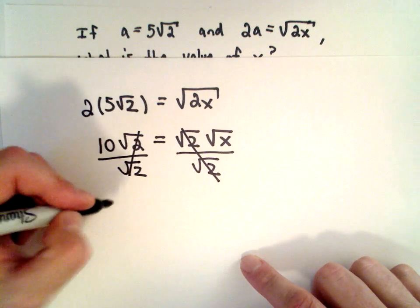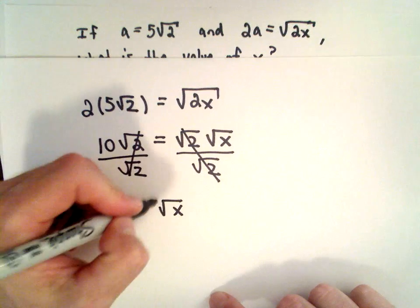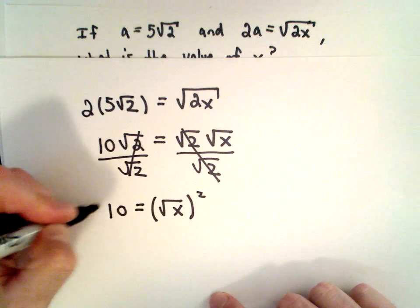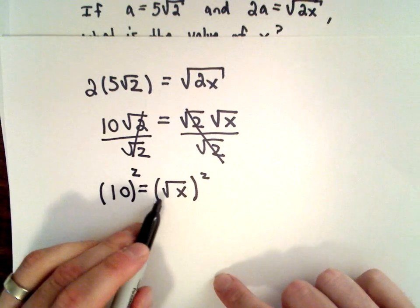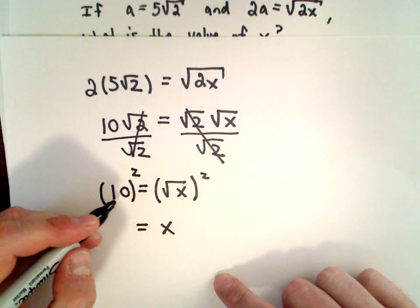10 equals the square root of x, and now I can simply square both sides. The square root of x squared is just going to leave me with x. 10 squared is 10 times 10, which will be 100.